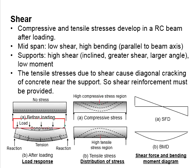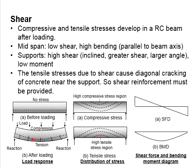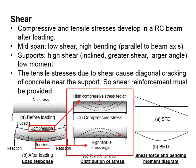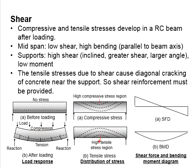However, as a UDL load is applied to the member, the beam starts to bend downward. This leads to tensile stress at the bottom of the beam and compressive stress on top of the beam. High tensile stress develops at the mid-span at the bottom of the beam, while high compressive stress develops at the mid-span on top of the beam.